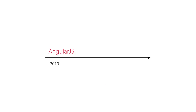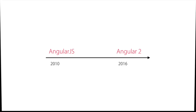So the Angular team decided to rewrite the original framework using TypeScript, and as a result, Angular 2 came out in mid-2016. This new version is entirely different from Angular 1, to the extent that you can think of it as a completely different framework.